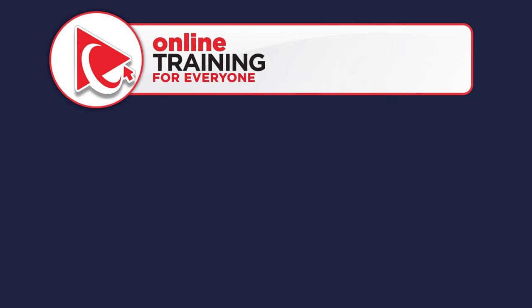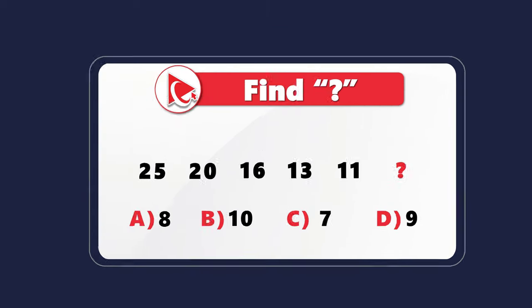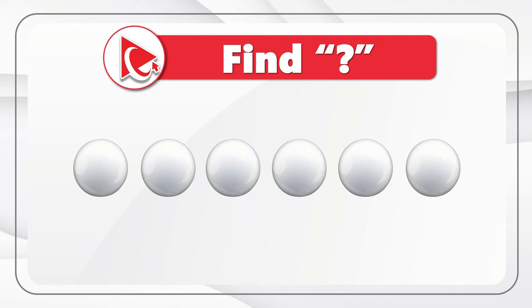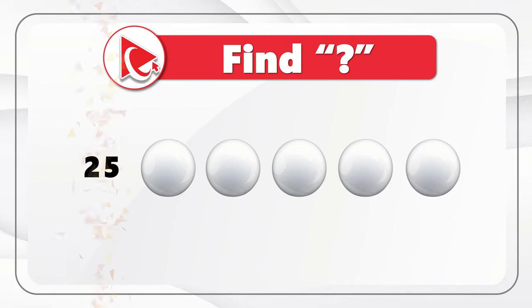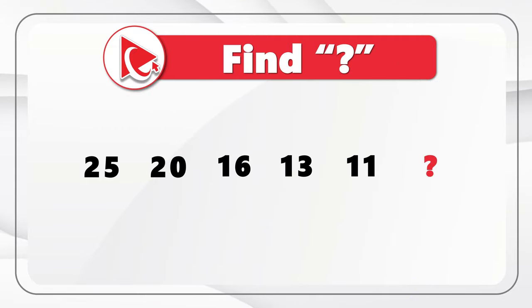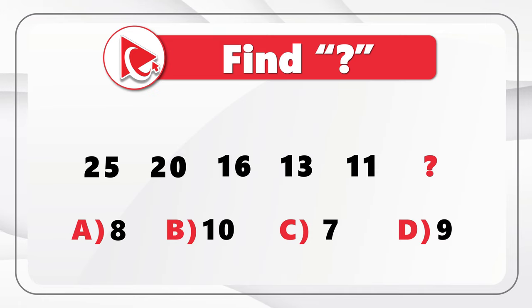I enjoy solving pattern questions because they're so easy to understand but sometimes not so easy to solve. We're presented with the sequence of numbers and we need to find the missing number, which is the next in the sequence. The numbers are 25, 20, 16, 13, 11, and then comes the missing number. You need to calculate it from four possible choices: Choice A — 8, Choice B — 10, Choice C — 7, and Choice D — 9.